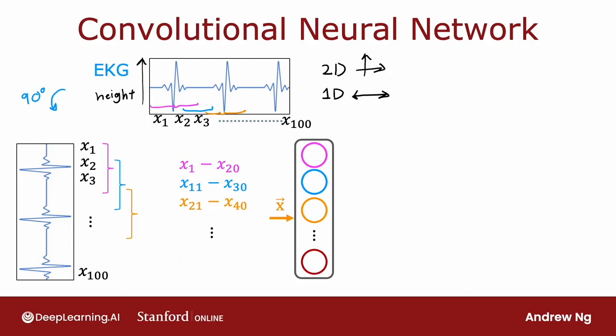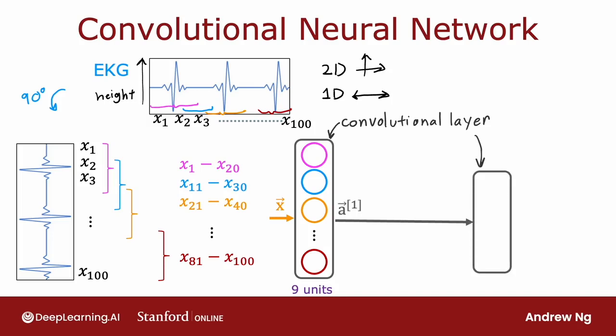And so on. And the final hidden unit, in this example, will look at x81 through x100. So it looks at a small window toward the end of this EKG time series. So this is a convolutional layer, because each unit in this layer looks at only a limited window of the input. Now, this layer of the neural network has nine units.